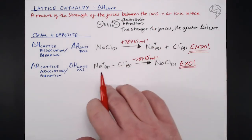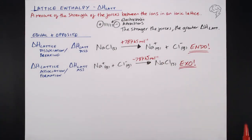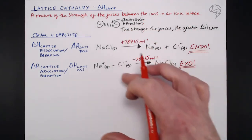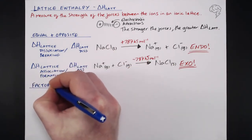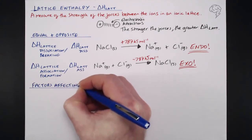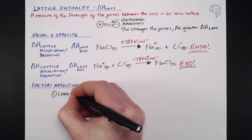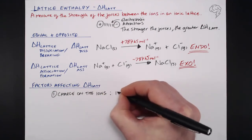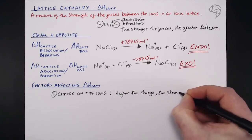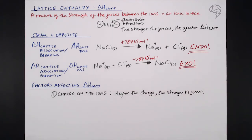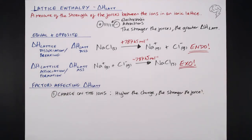We've got lots of different salts: group two and group six that can come together, group two and group seven, group one and group six, lots of different combinations of salts. So what is it that affects the size of this lattice enthalpy? Factors affecting Delta H lattice enthalpy. Well, the first thing, really really importantly, is the charge on the ions. What I mean by that is that the higher the charge on the ion, the stronger the force. Two plus ion and a two minus ion are going to be more attracted to each other than a one plus and a one minus.